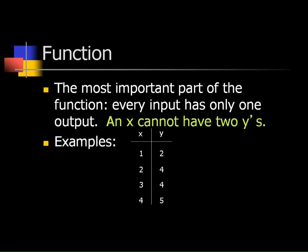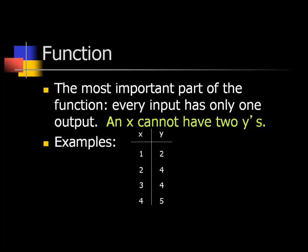Each x-value can only have one y-value. Looking here: the x-value of 1 goes to just 2, the x-value of 2 goes to 4, the x-value of 3 goes to 4, and 4 goes to 5. Each x-value only goes to one y-value. Two doesn't go to four and two — it just goes to four. That would be a function.